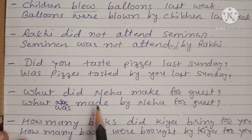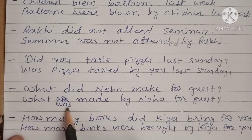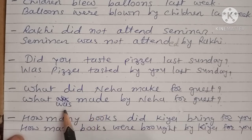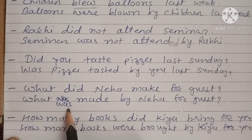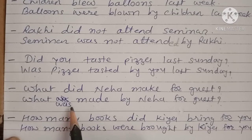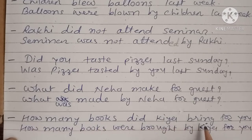Next question: 'What did Neha make for guest?' — What પછી was/were આવે. Subject ન આવ્યો ત્યારે were નો ઉપયોગ — 'What was made by Neha for guest?' — passive voice બ્રૅ.